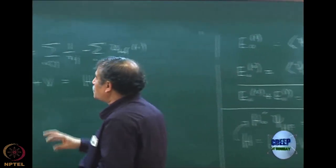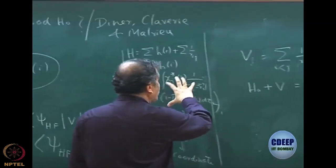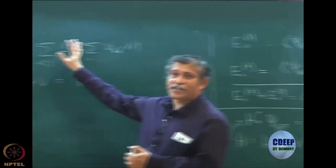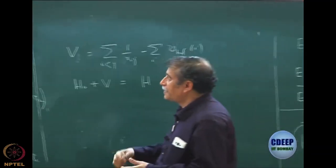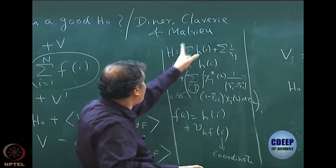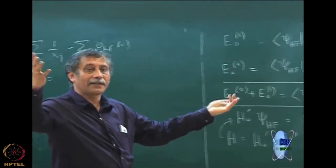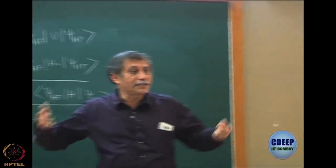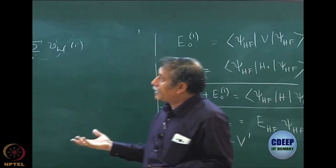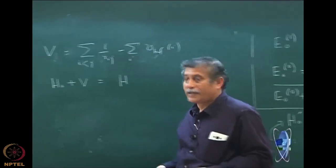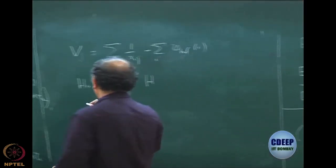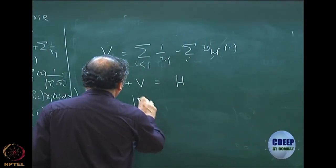So V now becomes V = Σᵢ<ⱼ 1/Rᵢⱼ − Σᵢ V_HF(i). Many people think V is just 1/Rᵢⱼ, but that is not true. Since I am starting from Hartree-Fock perturbation theory, I start from F as my original operator. If I had started with H₀ = Σ h(i) only, then V would just be 1/Rᵢⱼ — but I discarded that long ago because it gives a poor zeroth-order solution. Since my H₀ includes an additional operator, I must subtract it when defining the perturbation.